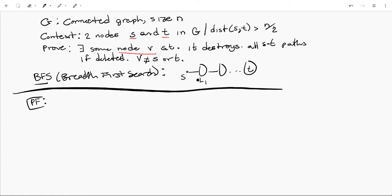So from S, by one edge, we can reach all the nodes in L1. Via two edges, we can reach all the nodes in L2 until we get to T.